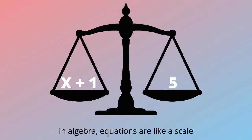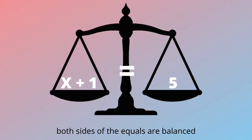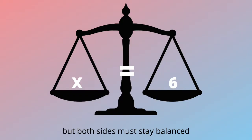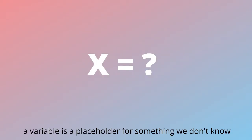In algebra, equations are like a scale — both sides are equal, or balanced. It's possible to rearrange it, but both sides must stay balanced.